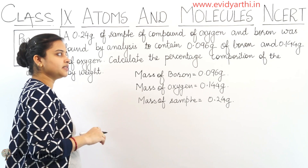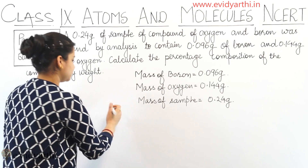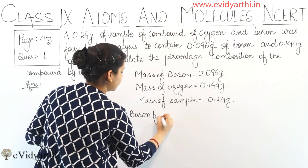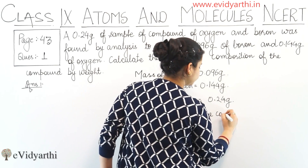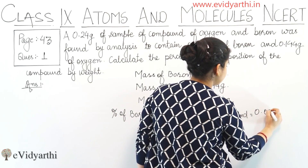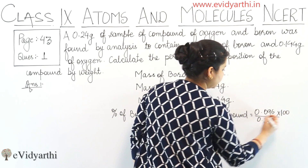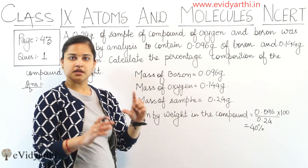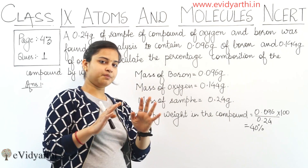Now, the percentage of boron by weight in the compound equals 0.096 divided by 0.24 into 100, which becomes equal to 40%. So boron present in the compound is 40% — the compound composition is 40% boron.